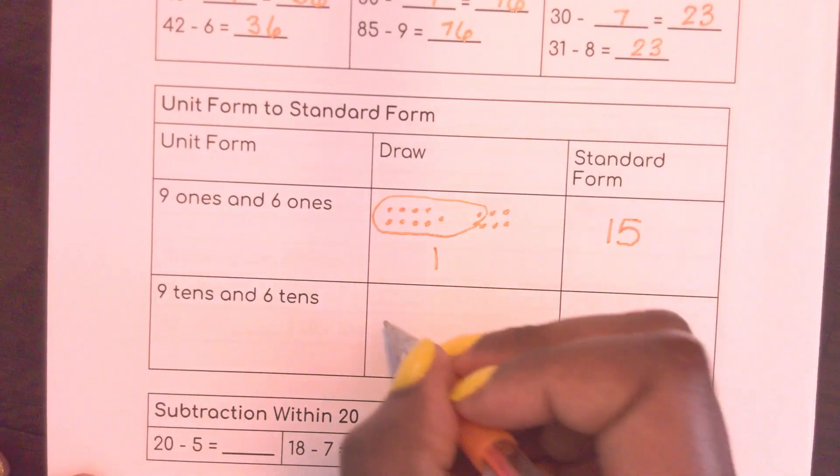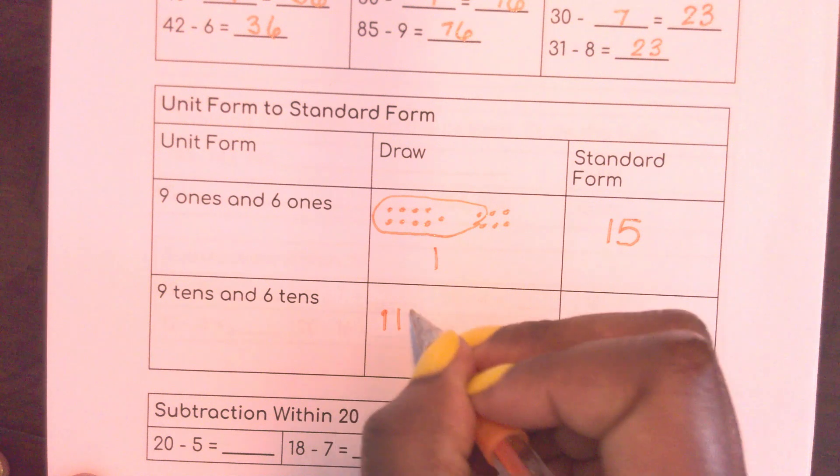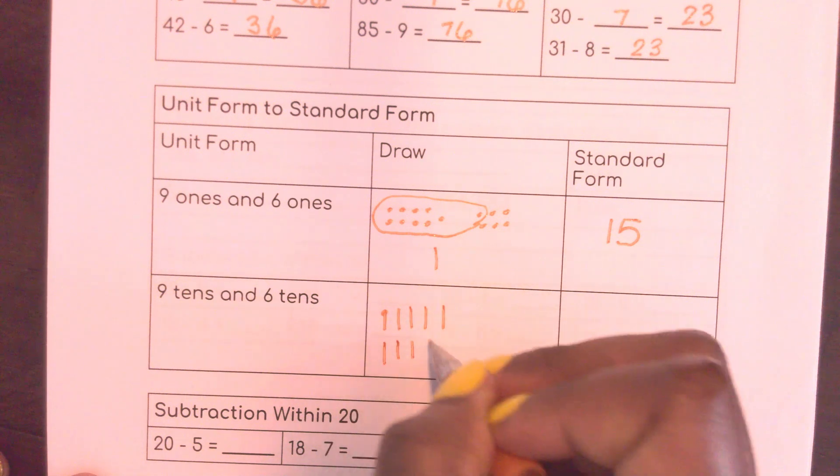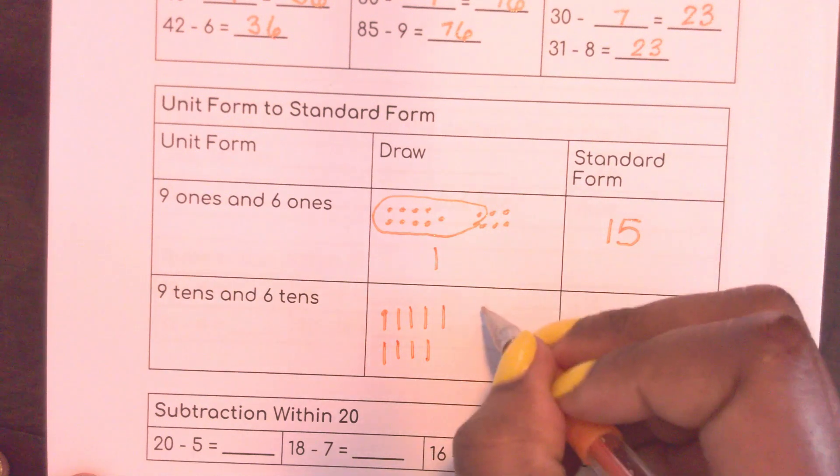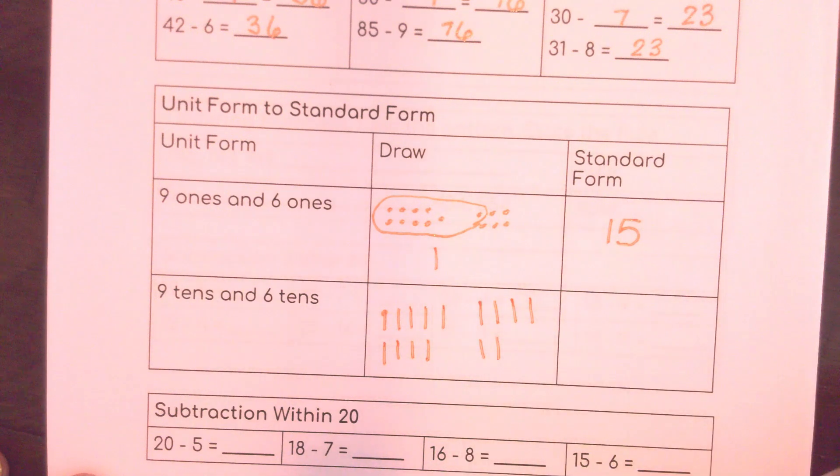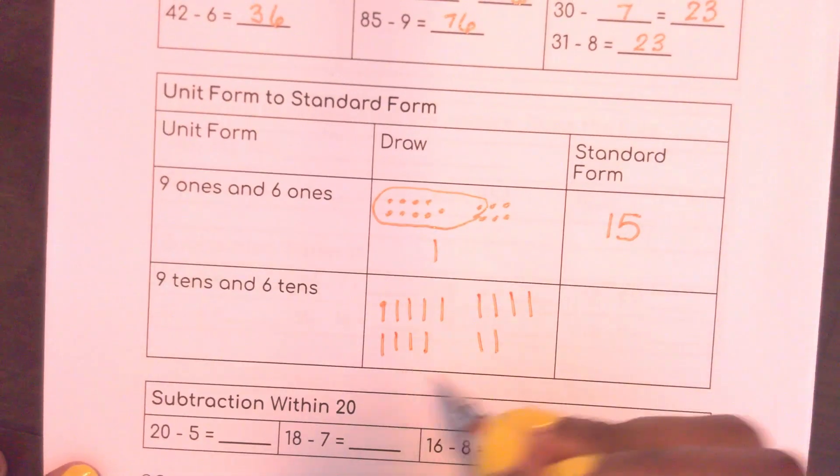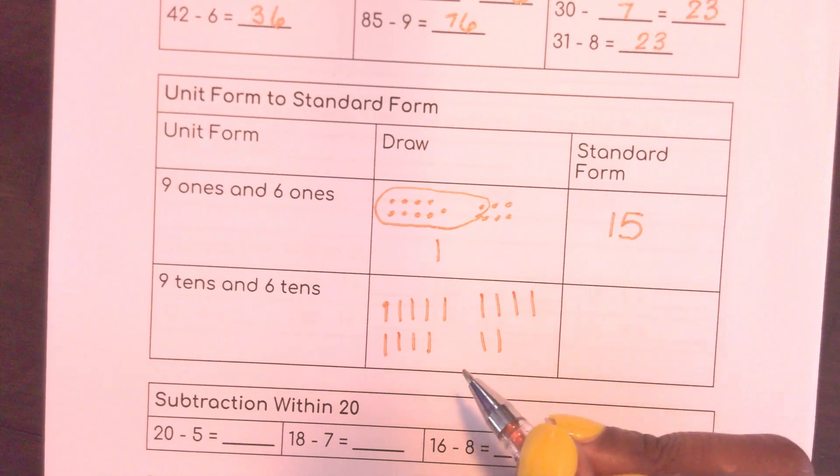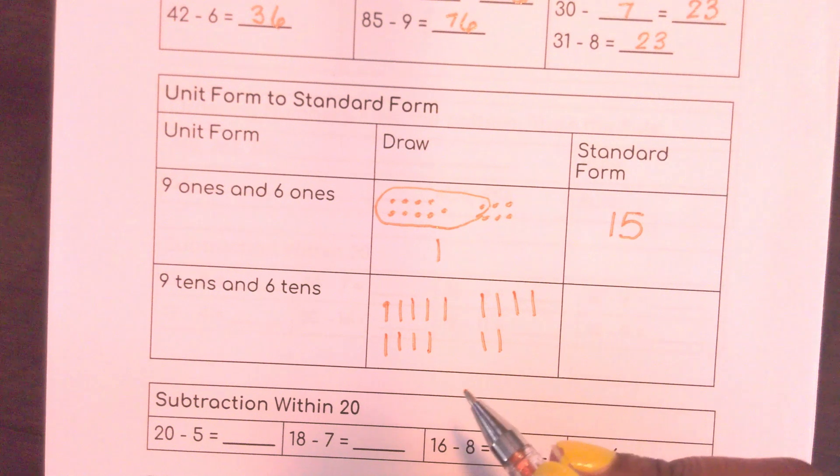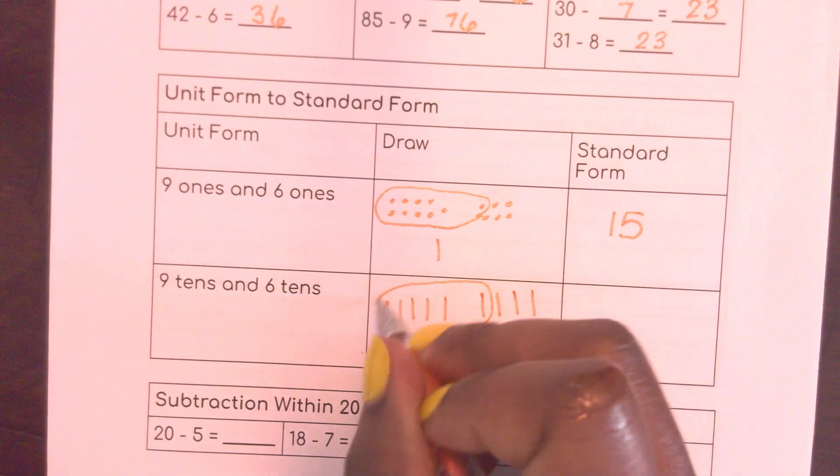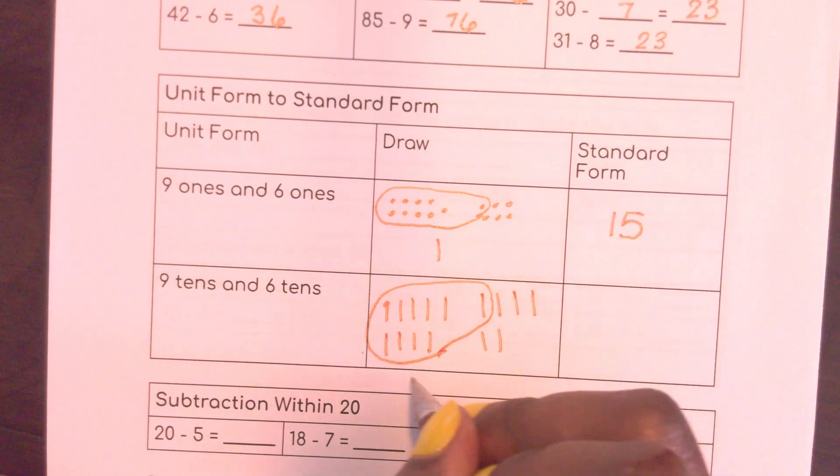Here I have 9 tens. 10, 20, 30, 40, 50, 60, 70, 80, 90, and 6 tens. 10, 20, 30, 40, 50, 60. So now I'm working with tens. Remember we talked about 10 tens makes 100. So I wonder if I can make 10 tens. Here I know I have 9. If I put one more then I can create 100.